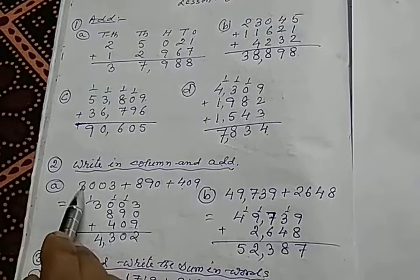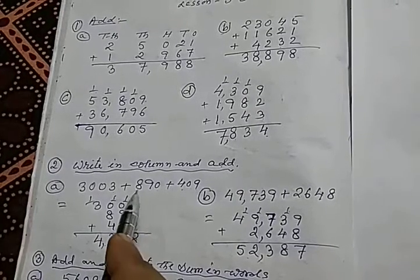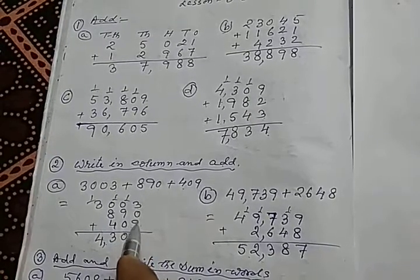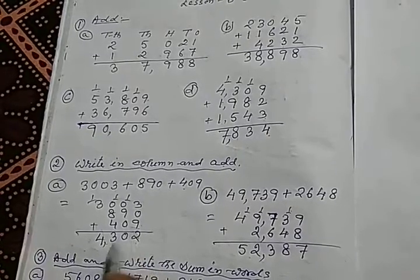That means when the numbers are given side by side with plus sign, then first time we have to arrange these numbers in column, then simple addition like this.